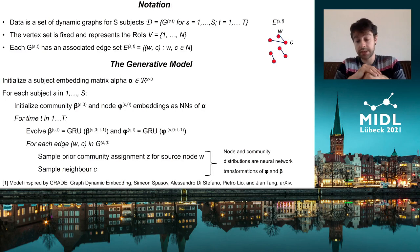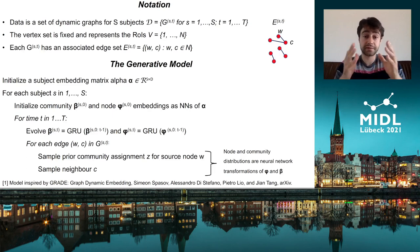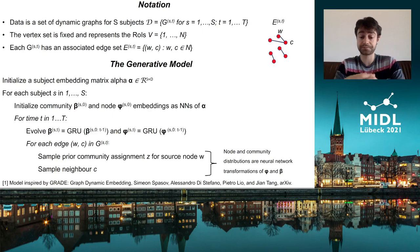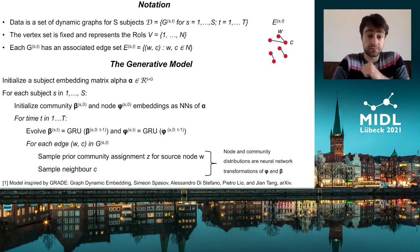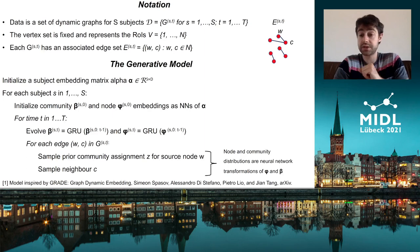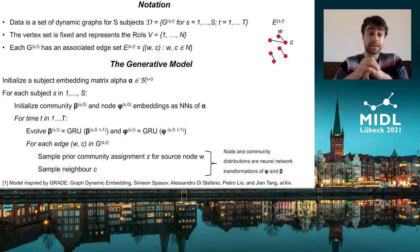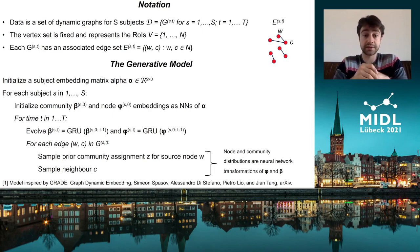In order to explain our model, I will first give some brief notation. We assume that we have S subjects in our dataset and for each subject we have a spatiotemporal graph. Each graph has an associated edge set at a certain time point t, and you can see an example of this here between some nodes w and c, where these nodes belong to a fixed node set V.